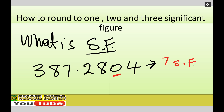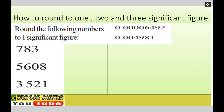Now let's look at how to round to one, two, and three significant figures. Question one: round seven hundred and eighty three to one significant figure. We look at the first figure and draw the line between the first and second figure. The second figure is eight — five or more — so we increase the first figure by one. Seven hundred and eighty three to one significant figure is eight hundred.